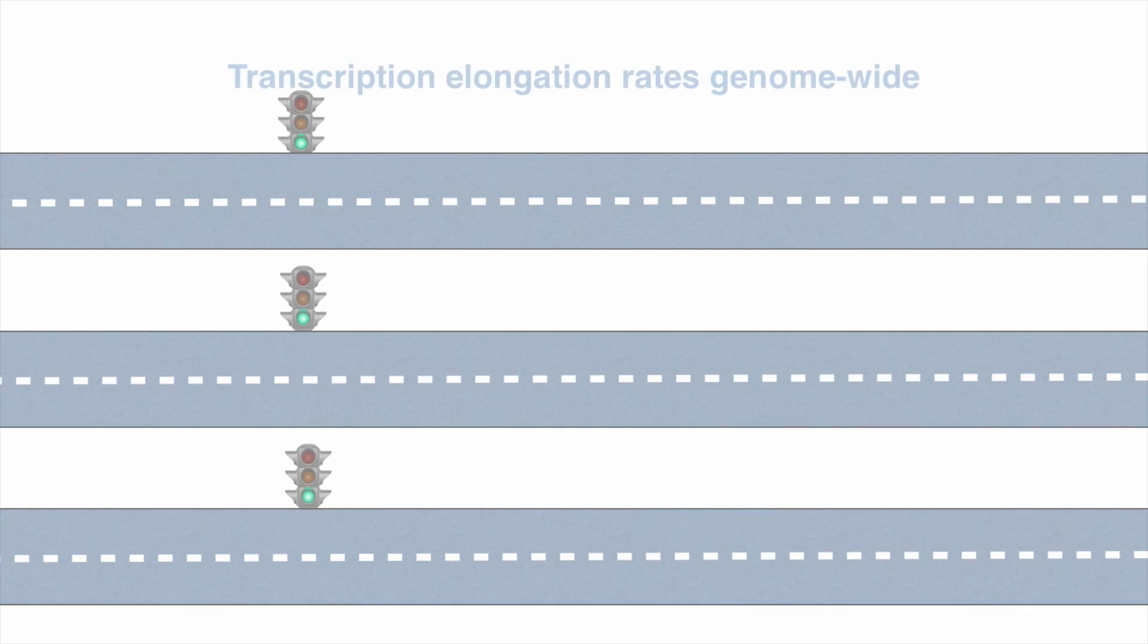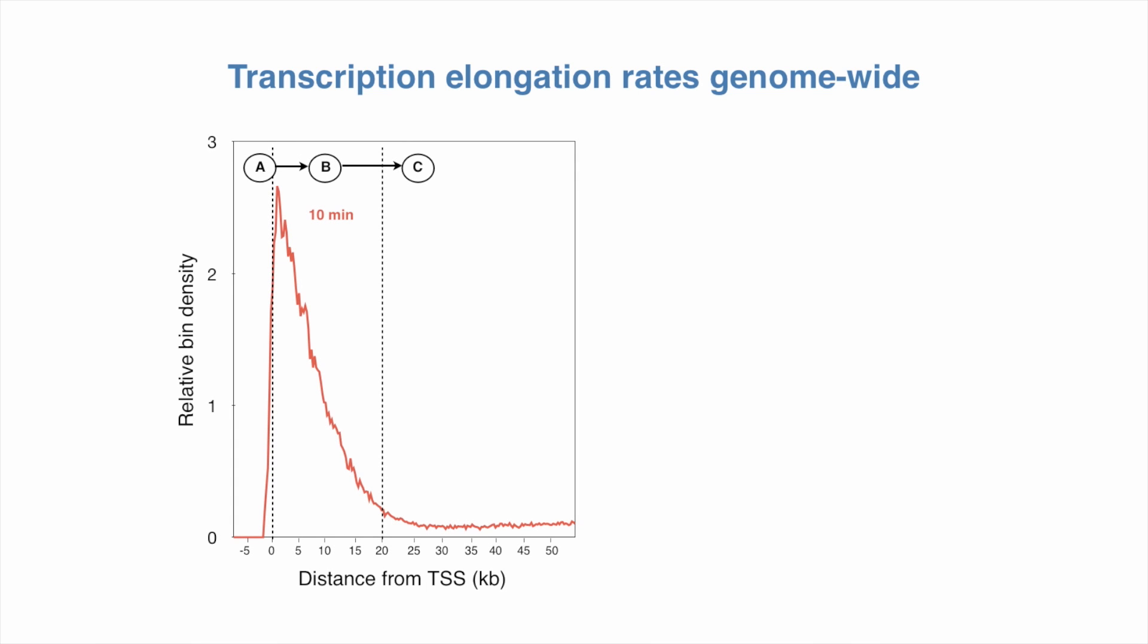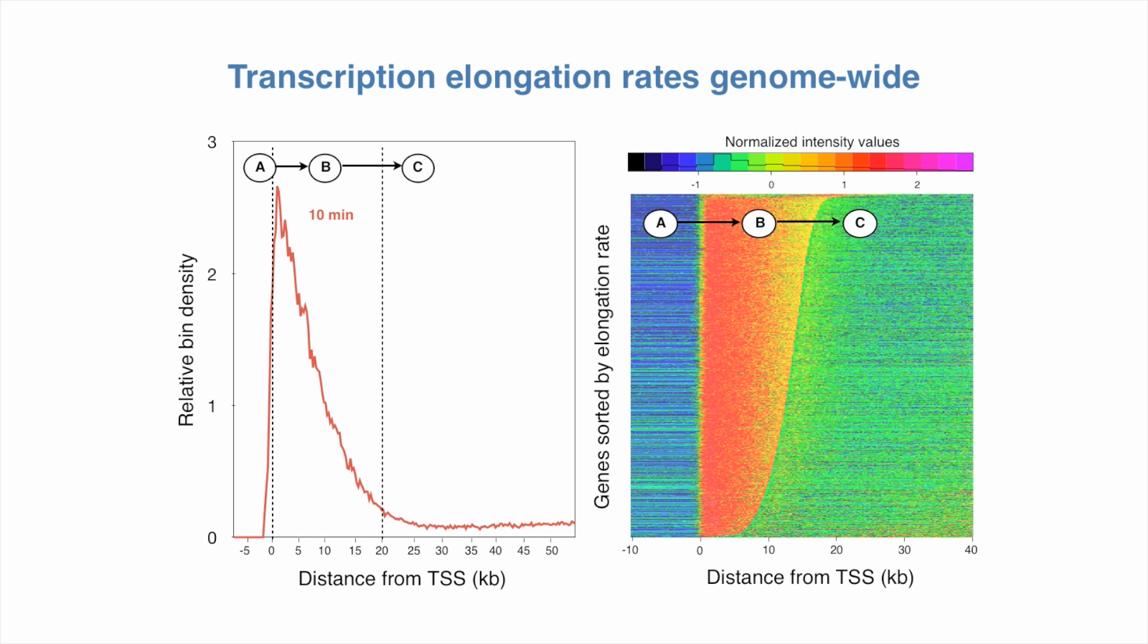By using our technique BRU-DRB-Seq, we were able to estimate the elongation rate for each gene. We did this by estimating the width of the transcription wave for each gene, and then we listed the genes in order of the elongation rate. You can see that they differ quite a bit, and we were interested in why that was.